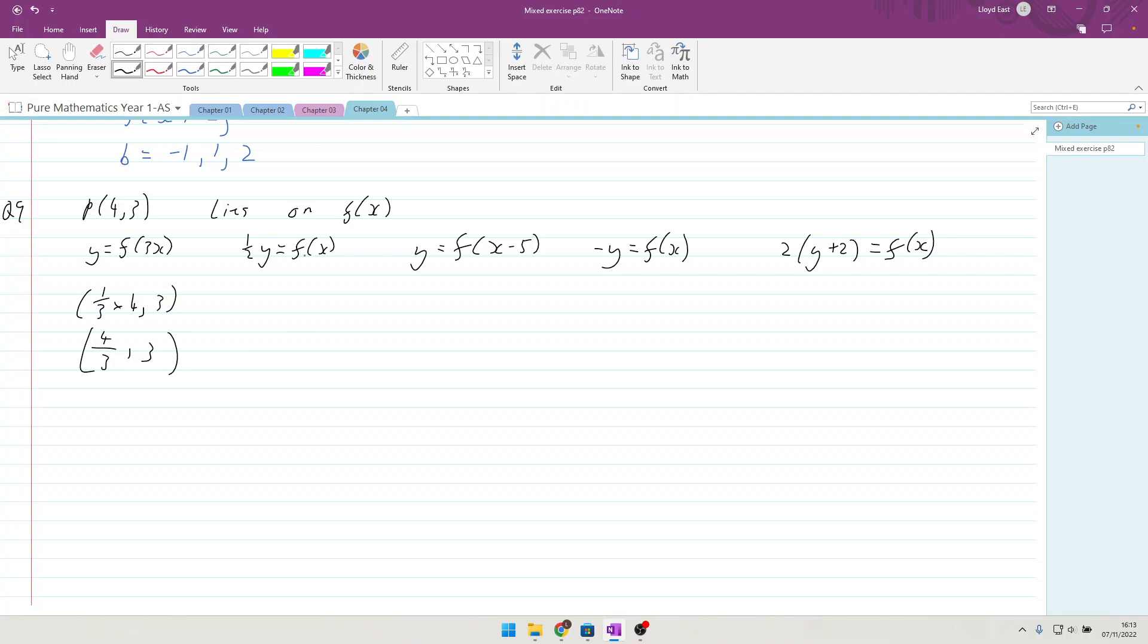Number 2: 1/2 y equals f(x). Quick rearrangement gives us y equals 2f(x). In this case, we are changing the vertical axis, the y axis, by a scale factor of 2. We're going to end up with the x staying the same and 2 times the y value, 2 times 3, so we end up with (4, 6).